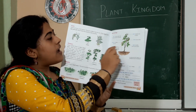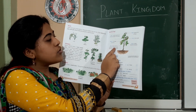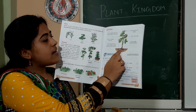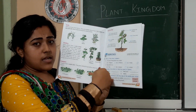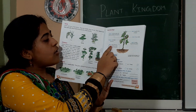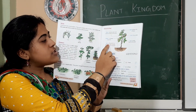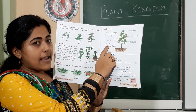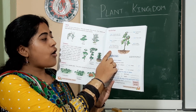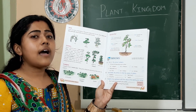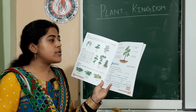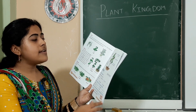Next is the root. The root is under the soil. It fixes the plant to the soil and takes up water from the soil for the plant.